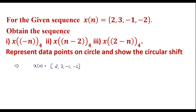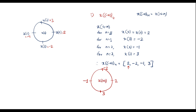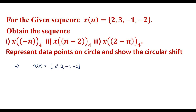Now let me plot x[-n] on the circle, as it is said to represent the data points on the circle. Drawing the circle: x[0] = 2 is placed here, x[1] = -2 is represented here, x[2] = -1 is represented here, and x[3] = 3 is represented here. This is x[-n]₄.